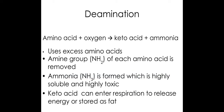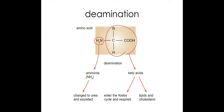Here's the word formula for deamination — you do need to know this. It uses excess amino acids and converts them into a keto acid by adding oxygen. That keto acid can then be used in aerobic respiration by going into the Krebs cycle, or it can be used to make things like lipids and cholesterol. The ammonia, however, does need to be changed into urea and excreted.